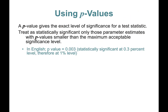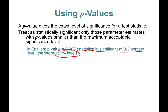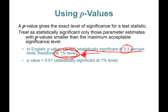In plain English: a p-value of 0.003 means this is statistically significant at the 0.3% level, and therefore it is significant at the 1% level, because 0.3% is less than 1%. If it is significant at 1%, it is automatically significant at 5% and 10% as well — but we always report the lowest level.